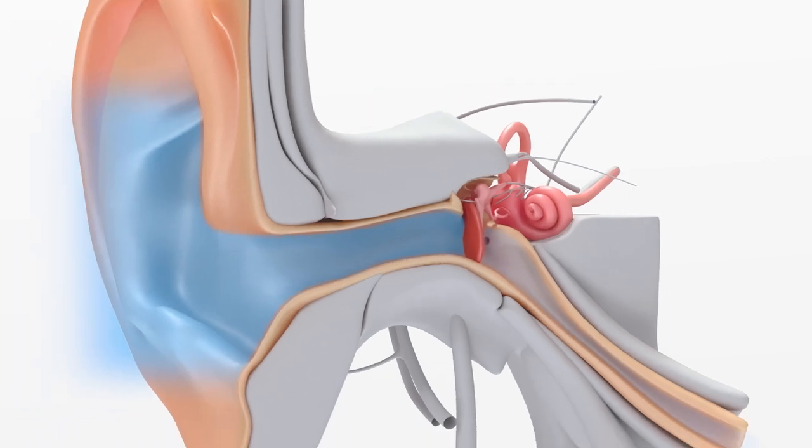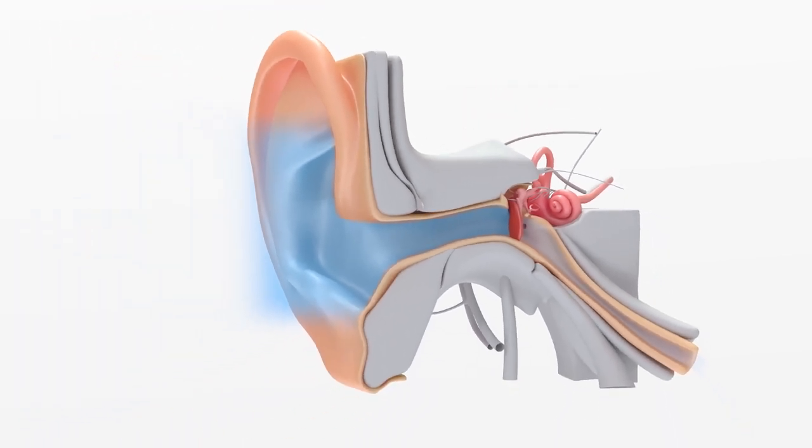The middle ear is normally filled with air and connected to the nose by the eustachian tube, allowing air to move into the middle ear to keep the same air pressure on both sides of the eardrum.